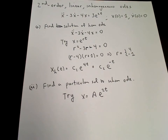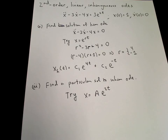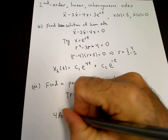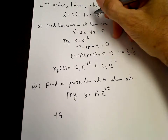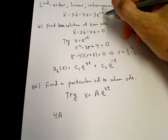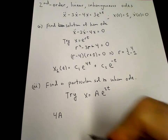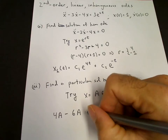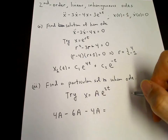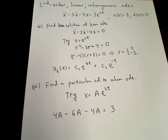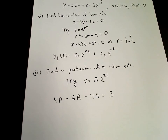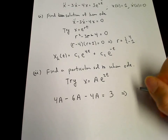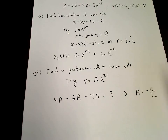We substitute that into the ODE and try to determine a. The second derivative of x gives us 4a — bringing down two 2s — so 4a times e to the 2t. Since e to the 2t cancels out of each term, we just work with the coefficients. So x double dot gives 4a, minus 3 times x dot gives minus 6a, and minus 4 times x gives minus 4a. That equals the right-hand side, which is 3. So 4a minus 4a cancels, leaving minus 6a equals 3, giving a equals minus 1 half.